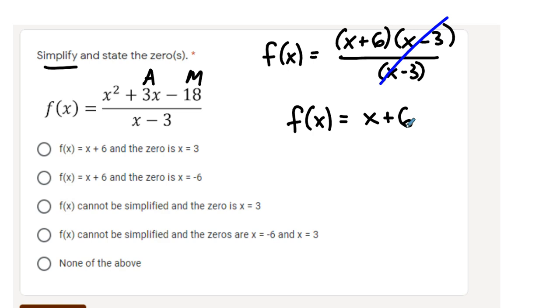So the first step is simplify. It can't be one of these because this can be simplified, so it's got to be one of these. And then it's asking you which one's the 0. The 0 is the x value that makes the output be 0.